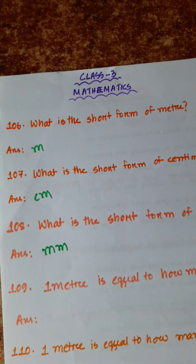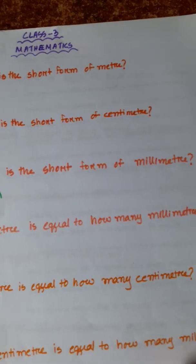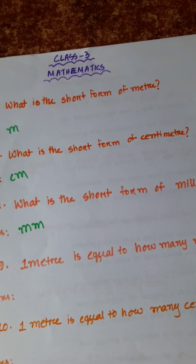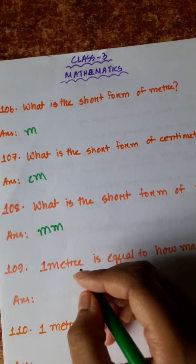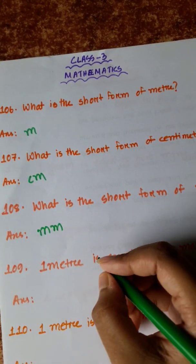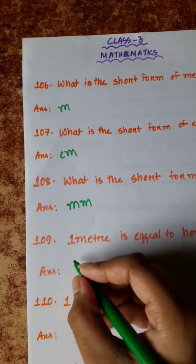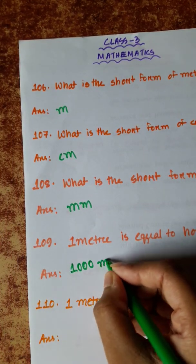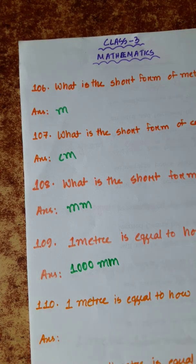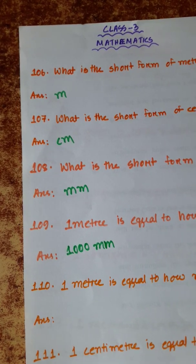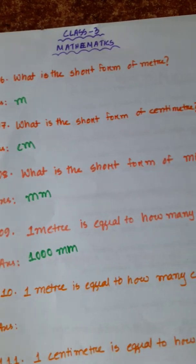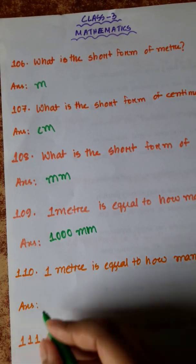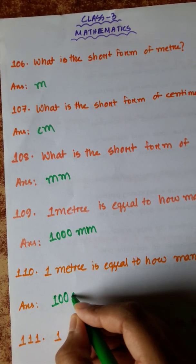Number 109: 1 meter is equal to how many millimeters? 1 meter is equal to 1000 millimeters. Number 110: 1 meter is equal to how many centimeters? 1 meter is equal to 100 centimeters.